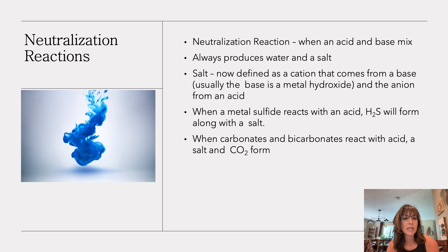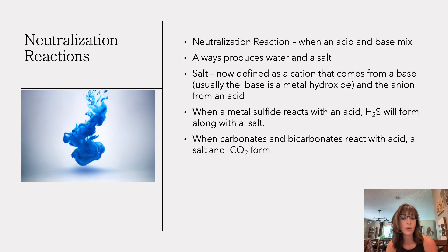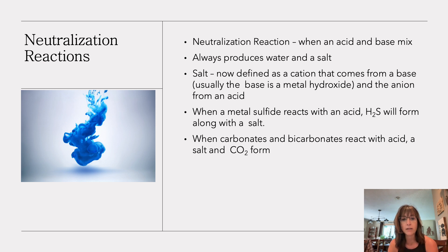Any time an acid and a base are mixed together, we get a neutralization reaction — they neutralize each other. They always produce water and a salt. Neutralization does not necessarily mean your ending pH will be 7. A strong acid with a weak base will probably end below 7. A strong base with a weak acid will probably end in the basic pH range. Strong acid with strong base is usually around 7. A salt is simply a cation from a base — usually a metal hydroxide — and an anion from the acid. When a metal sulfide reacts with an acid, you get H2S along with a salt. When carbonates and bicarbonates react with an acid, you get a salt and carbon dioxide.